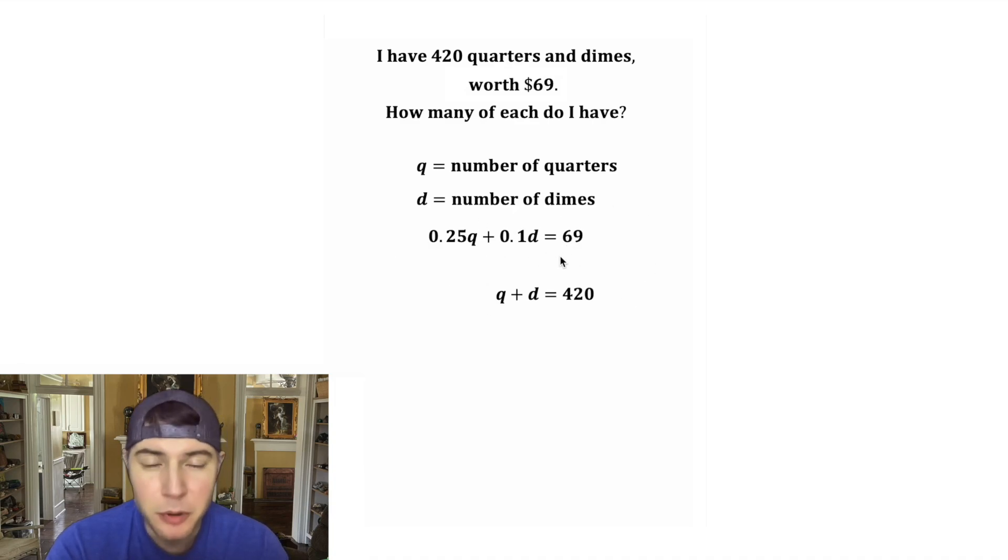Let's move this one down, and let's multiply both sides of this top one by negative 4. Negative 4 times 0.25Q is negative Q. Negative 4 times 0.1D is equal to negative 0.4D. And 69 times negative 4 is negative 276.